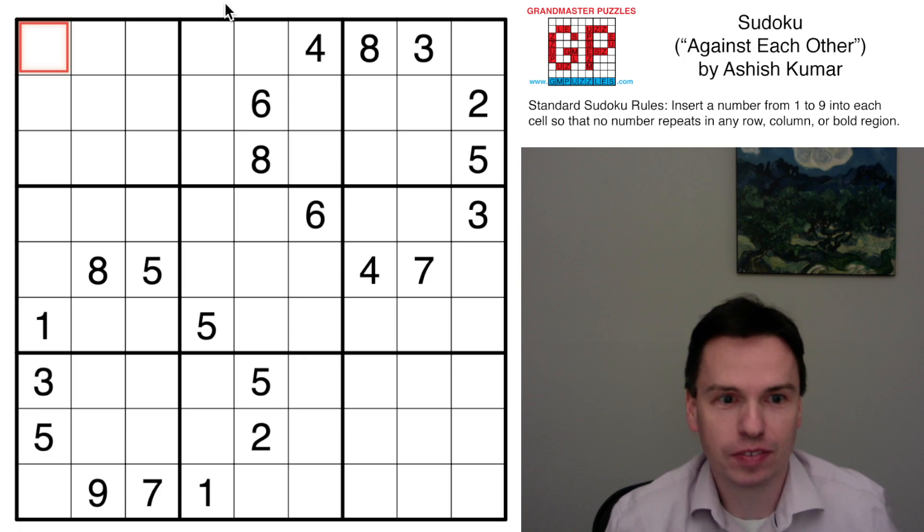So here we talk through the Saturday-level Sudoku by Ashish Kumar called Against Each Other. It has these two symmetric circle-like shapes. It looks like 22 total givens.